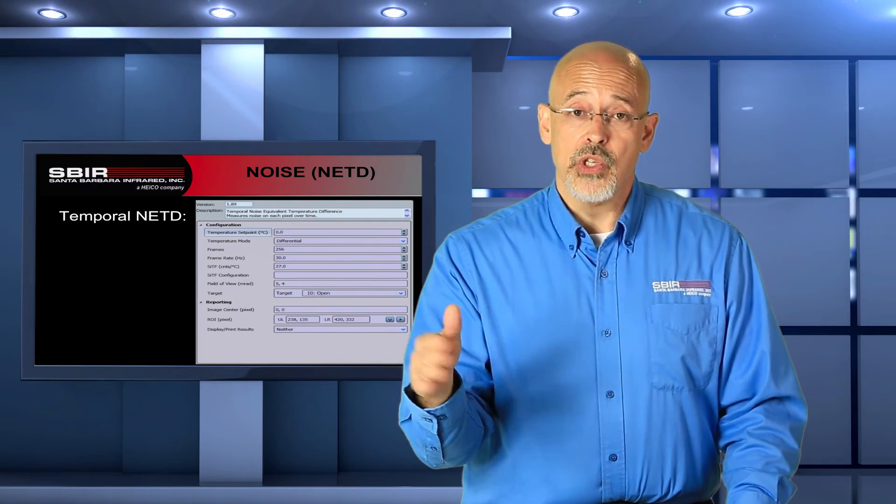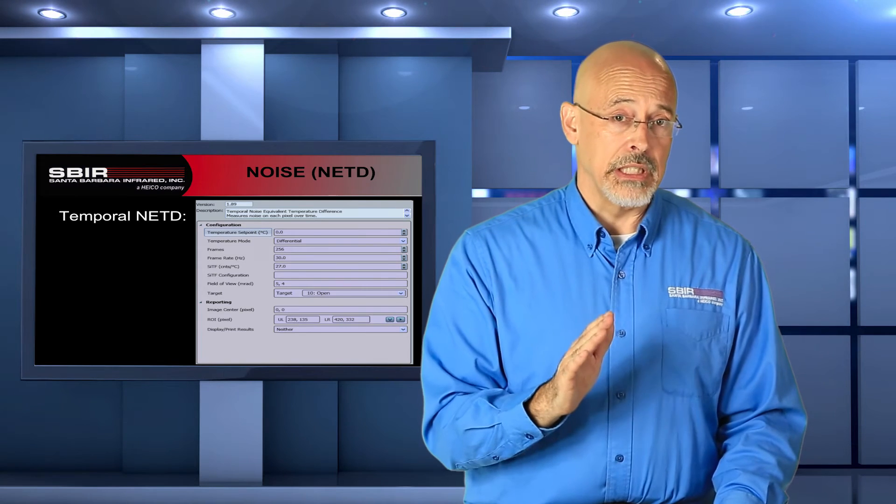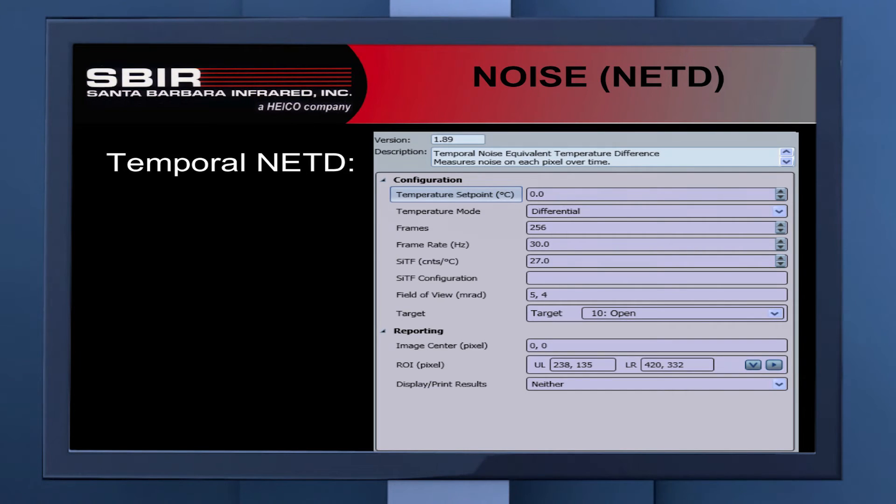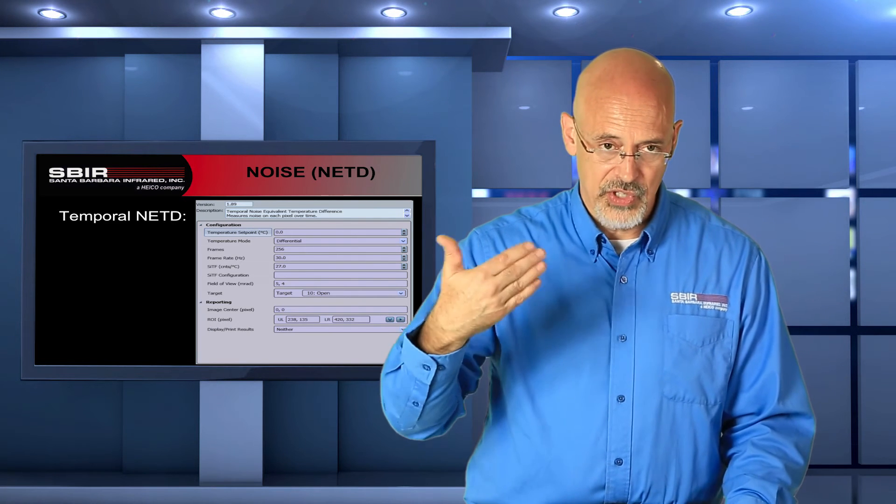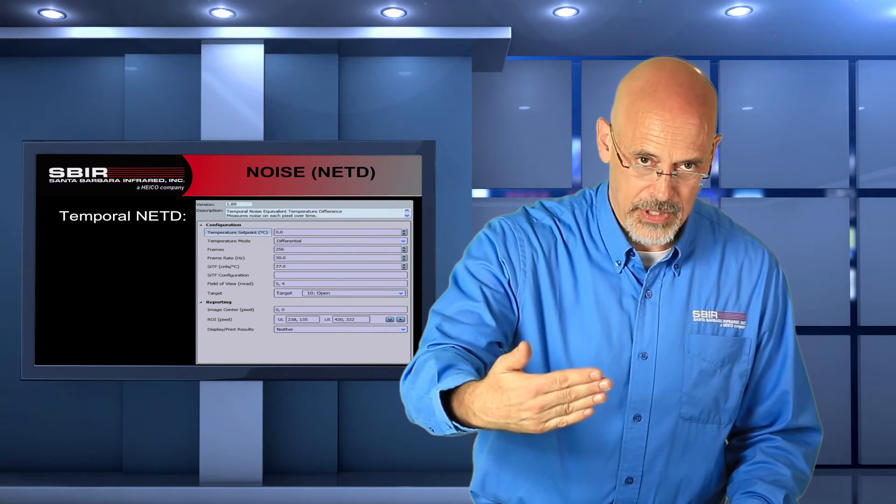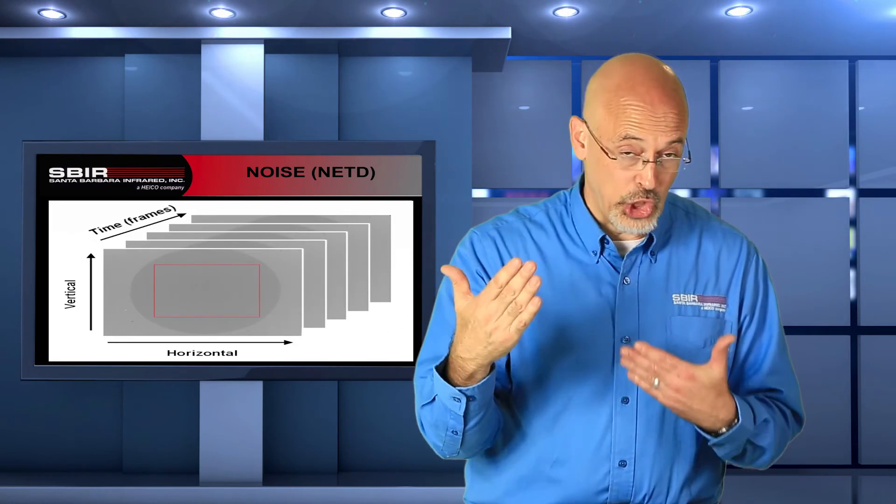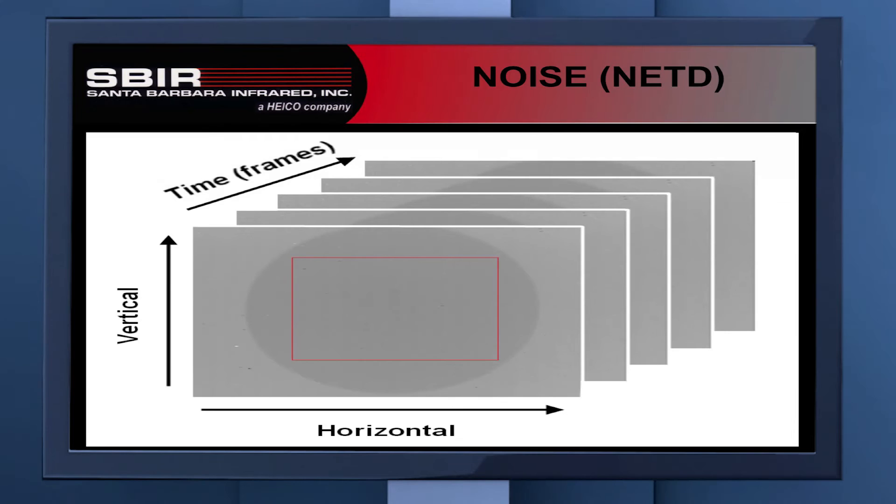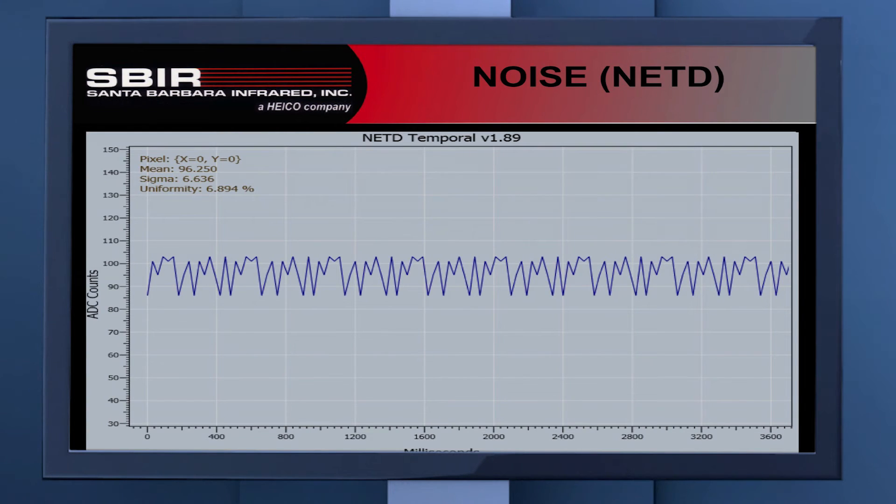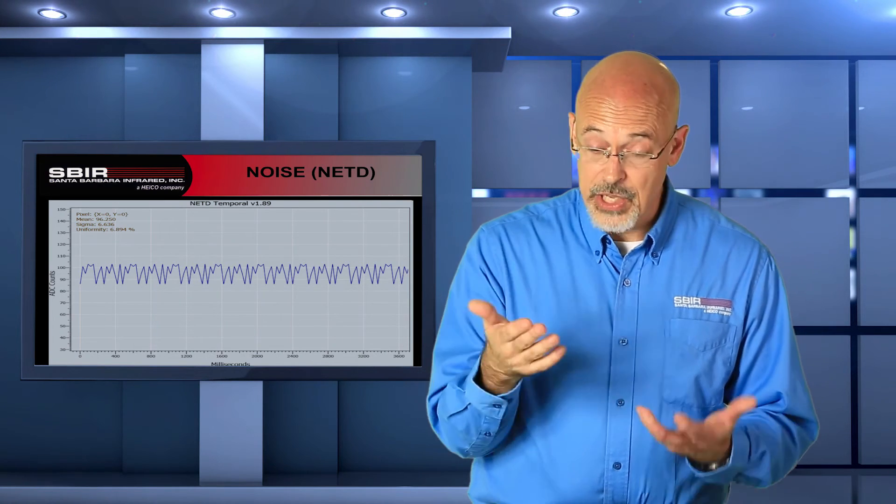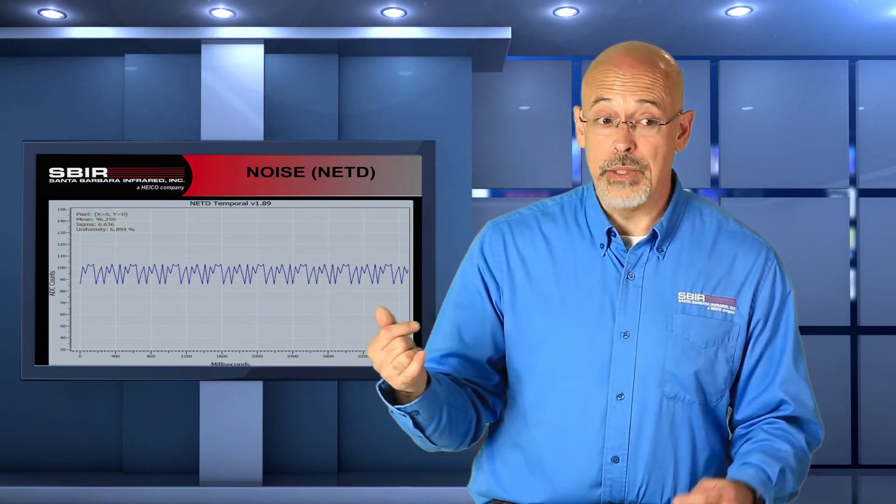The next way that we can take measurements is with temporal NETD. The procedure for temporal NETD says that I'm going to be taking a series of images. How many images am I going to collect? Because we're taking the series of images, we need to store all of that. And the reason we take that series of images, here you can see the data cube, that's the series of images that are collected. We have both horizontal, vertical, and over time data. We can take any individual pixel and look at how it varies with time.